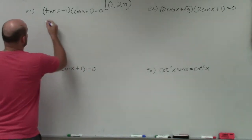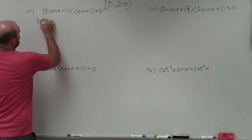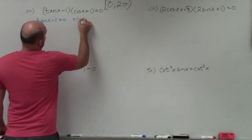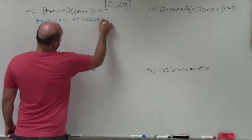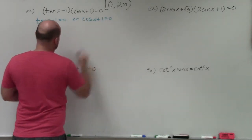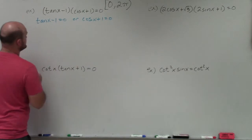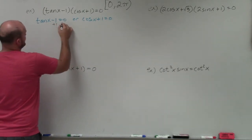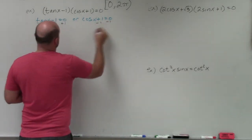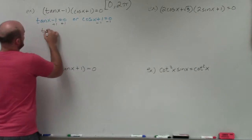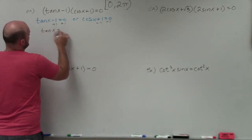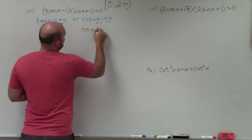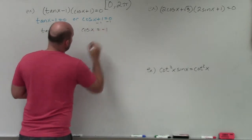By applying the zero product property, I can say that tangent of x minus 1 is equal to 0, or cosine of x plus 1 is equal to 0. Then I solve for my trig function on both: tangent of x equals 1, and cosine of x equals negative 1.